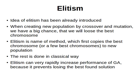We want the good chromosomes to survive and stay for the new population. The rest is done in the classical way. Elitism can very rapidly increase the performance of the genetic algorithm, because it keeps the good chromosomes — the good candidate solutions — available for new iterations. It prevents losing the best found solutions.